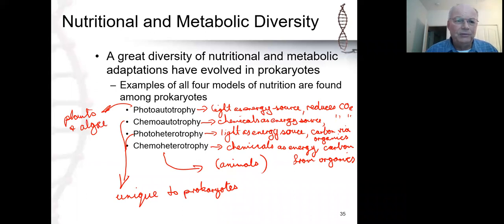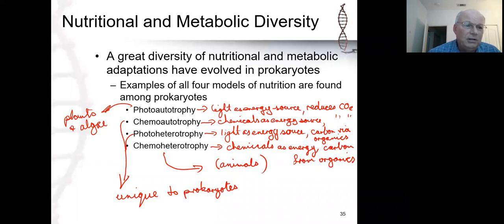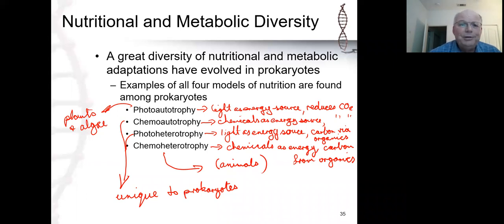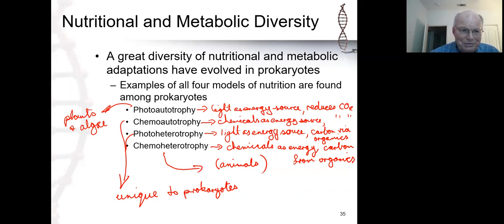Cyanobacteria do photoautotrophy, and the reason why plants and algae can do photoautotrophy is because they contain resident cyanobacteria — the chloroplasts. Plants and algae take advantage of their endosymbionts, the chloroplasts, which were derived from cyanobacteria. Chemoheterotrophy is done by animals and fungi. But chemoautotrophy and photoheterotrophy are done only by prokaryotes. Those are the two nutritional modes unique to prokaryotes.